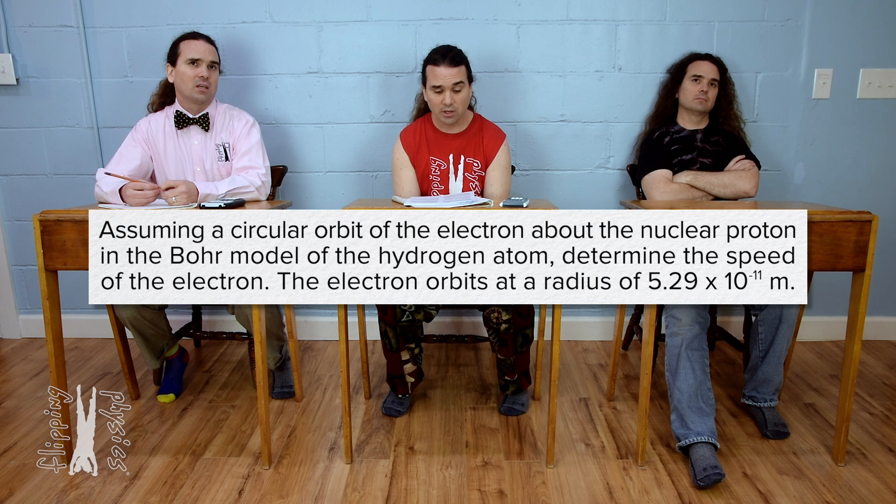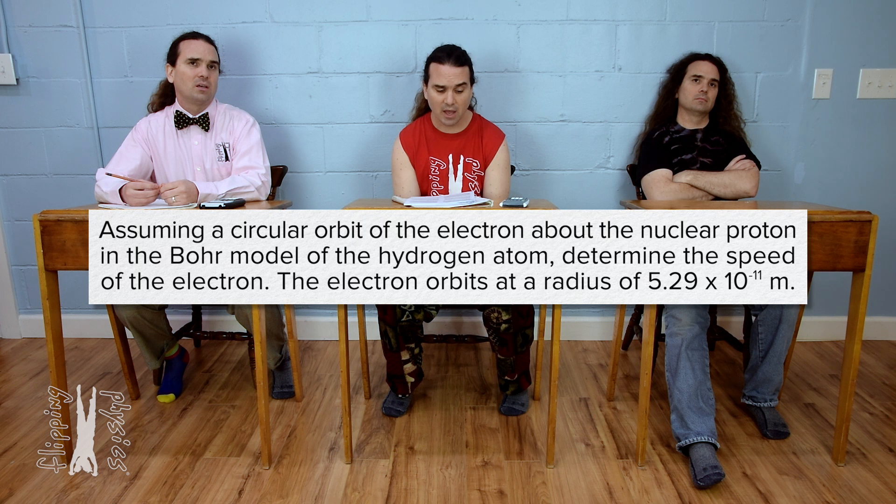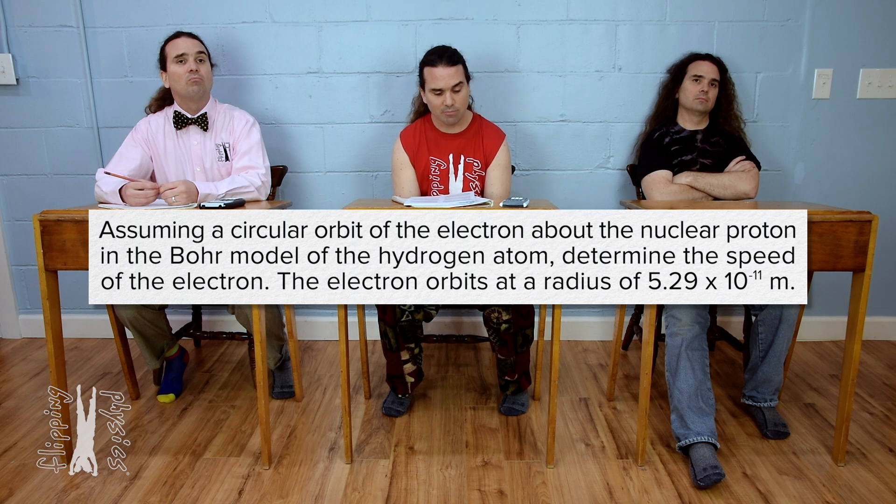Flippin' physics! Assuming a circular orbit of the electron about the nuclear proton in the Bohr model of the hydrogen atom, determine the speed of the electron. The electron orbits at a radius of 5.29 times 10 to the negative 11 meters.